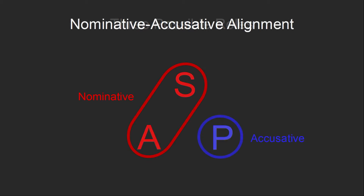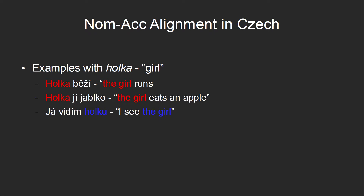The most common sort of alignment is nominative-accusative alignment, where we treat the subject and the agent the same and call this the nominative case, and we treat the patient distinctly and call that the accusative case. An example of a language that uses nominative-accusative alignment is Czech. Here are some examples using the Czech word for girl, 'holka.' 'Holka běží' — the girl runs.